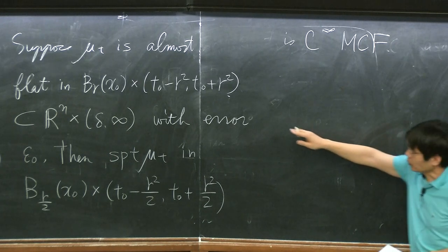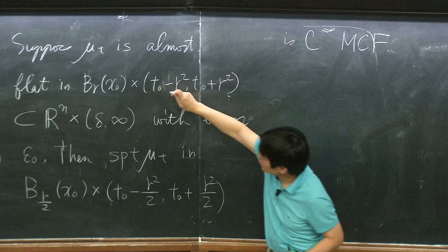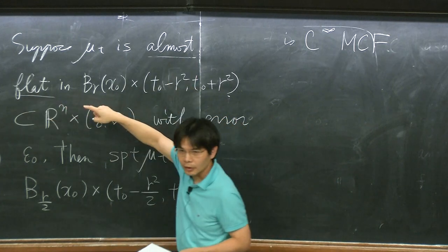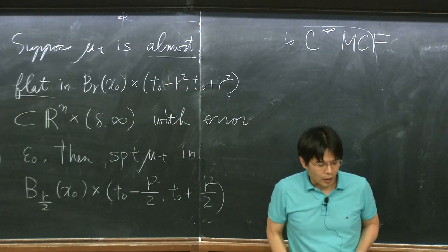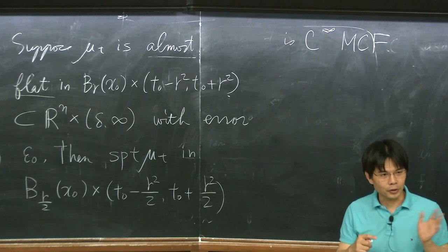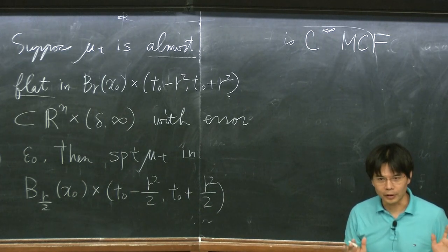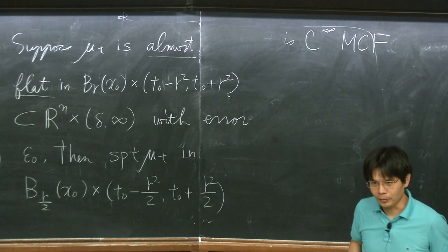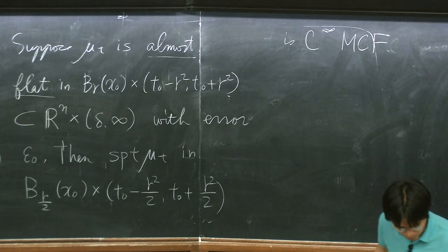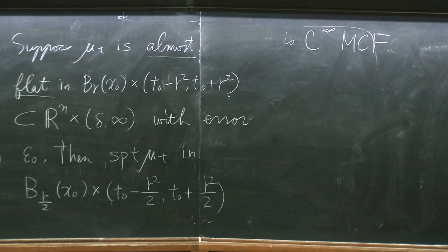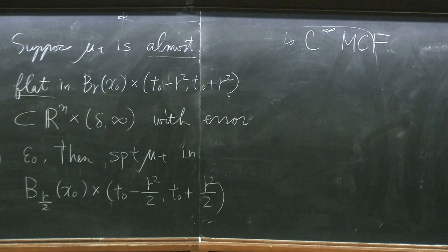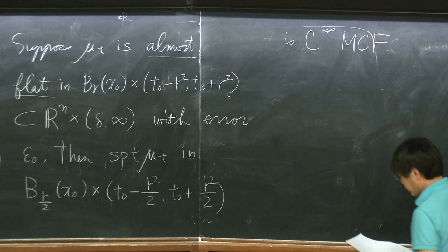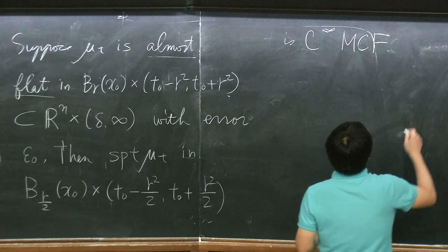Note that almost flatness is not satisfied around, for example, a junction point — a junction point is not going to satisfy this almost flatness condition — so I'm not claiming any regularity at the junction point. Away from junction points is what we are looking at. Also, it's important that we have estimates as well. Moreover, the support of mu_T is represented as a graph of a function over the plane A I talked about, and not only is it smooth but there's an estimate as a graph.